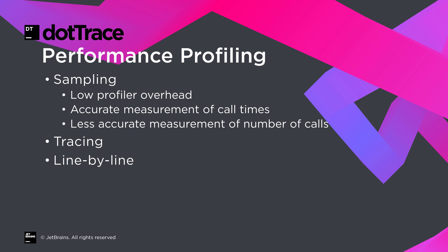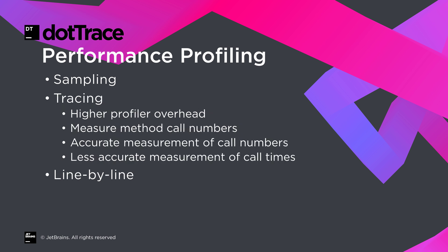With fewer interruptions, the call time values will be very detailed, as there is almost no overhead from the profiler. Sampling comes with low overhead and provides good information on how much time it takes to execute a certain method. Tracing interrupts our application more often, which makes time measurement less reliable, but it does provide us with better information on how often a method was executed.